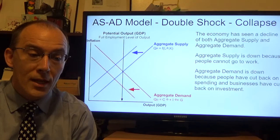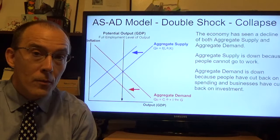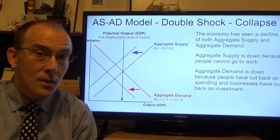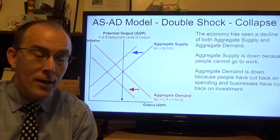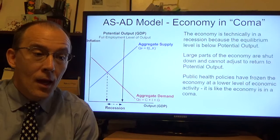Simultaneously, there was also a reduction in aggregate demand. At first this was caused by people not being able to spend money since businesses were closed. But as the days and weeks went on, workers haven't been paid, so they cut back on their consumption. In addition, businesses nervous about the future have cut back on their level of investment. So the collapse in the economy is really a double shock.